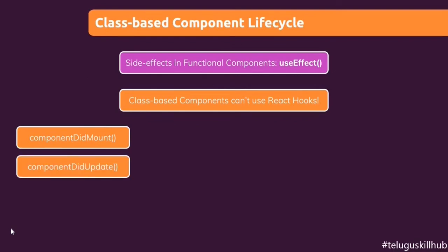The second lifecycle method is componentDidUpdate. This lifecycle method — note that hooks are only for functional components — componentDidUpdate is triggered when you have a state value that gets updated. If you don't have a state value to update, componentDidUpdate will not execute.